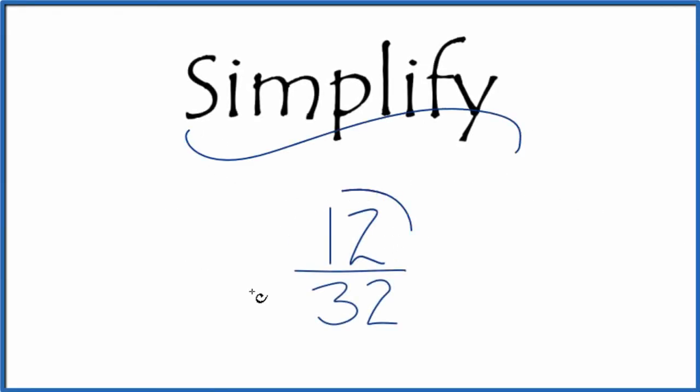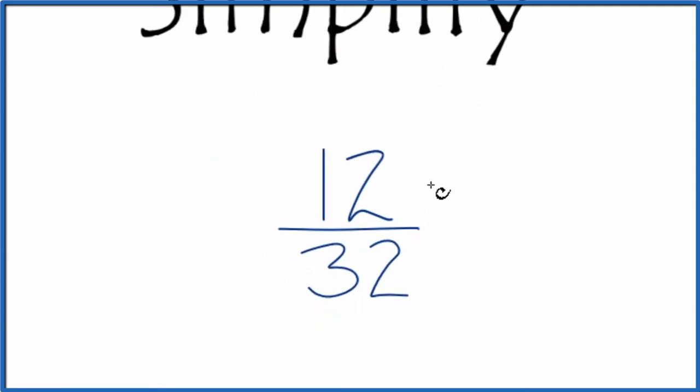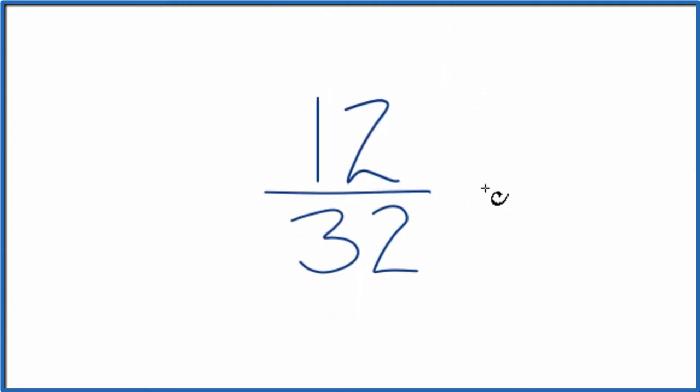Let's simplify the fraction 12 over 32, and here's how we'll do it. What we're going to do is find a fraction that's equivalent, has the same value as 12 over 32, just reduced to lowest terms.